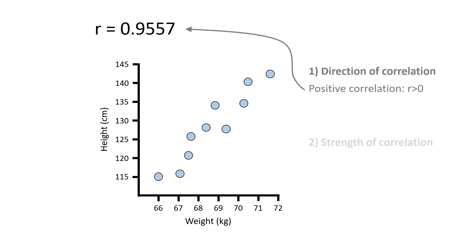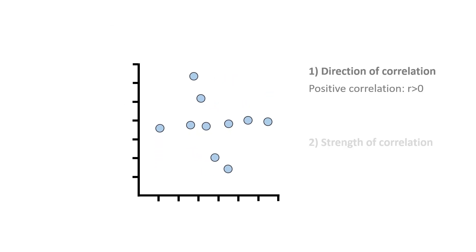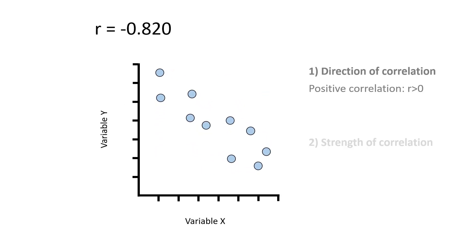If we performed a different experiment measuring different variables and our data looked like this, then we performed a Pearson correlation test, we might get a different r-value — say negative 0.82. Since the r-value is negative, this means that there is a negative correlation between the two variables. So as variable x increases, variable y decreases, or vice versa if plotted the other way around.